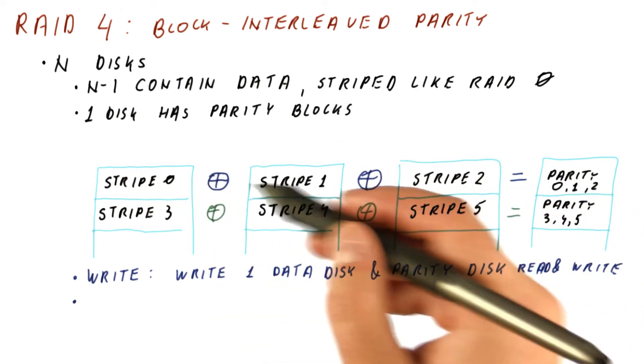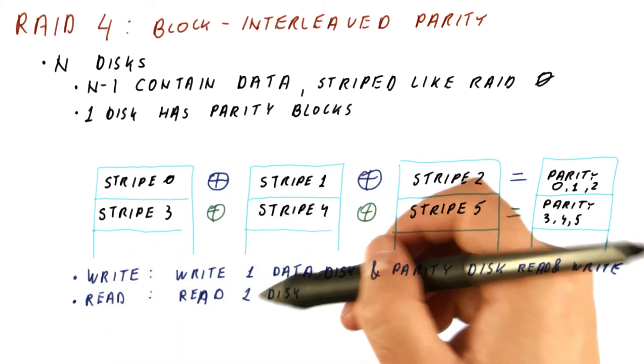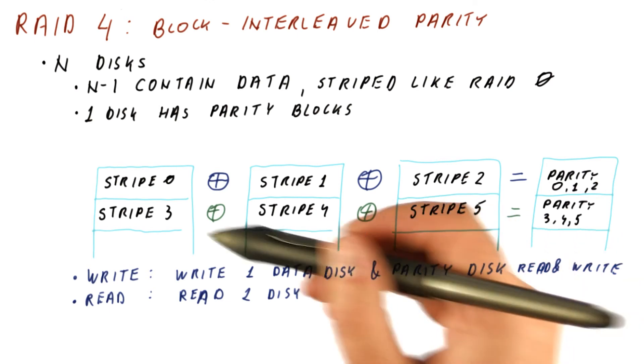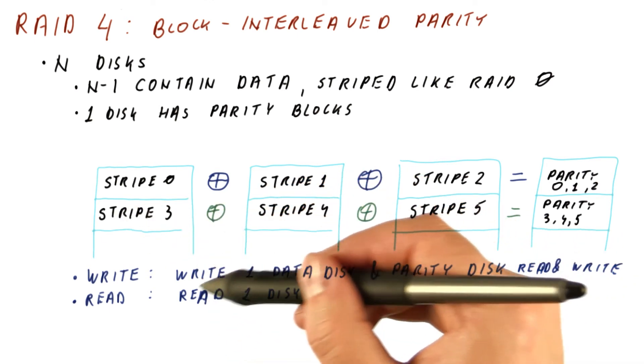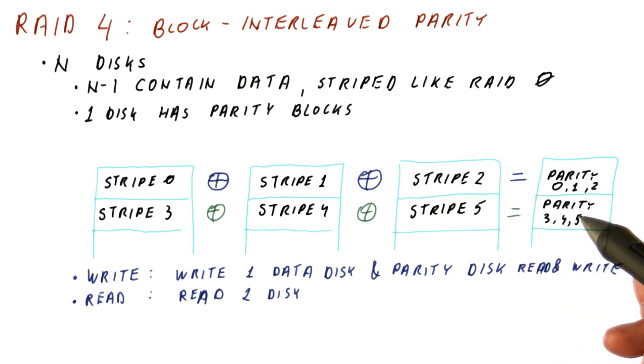A read, however, only needs to read the data from the disk where the data is. We will only reconstruct the data if that read fails. But in the normal scenario where we get the data we want, we don't even have to consult the parity bit for reads.